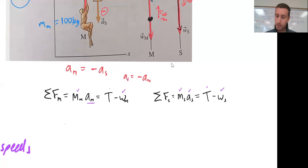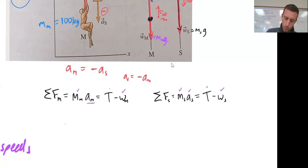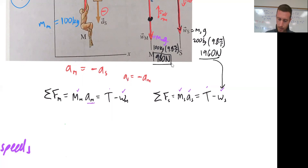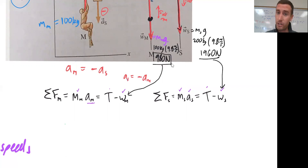Let's find the weight of each one. The weight of the man equals mass of the man times g: 100 kilograms times 9.8 meters per second squared equals 980 Newtons. The weight of the set equals mass of the set times g: 200 kilograms times 9.8 meters per second squared equals 1960 Newtons. Now I'll fill both of these into my equations and set tension equal to each other.